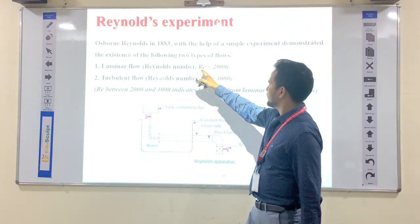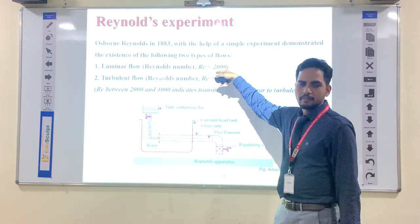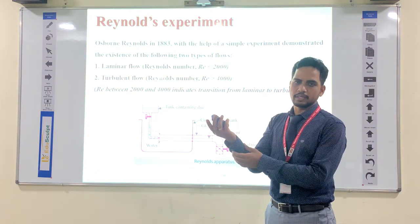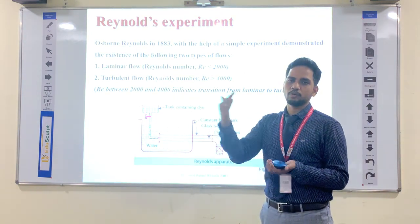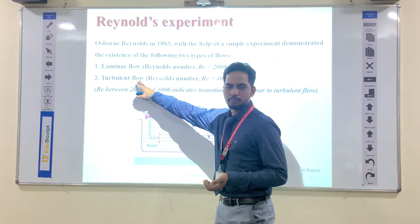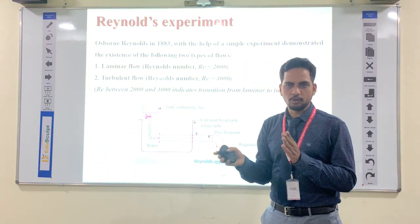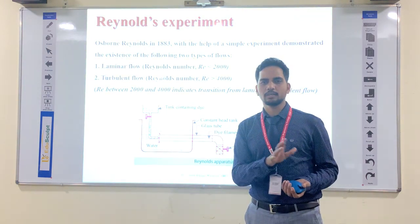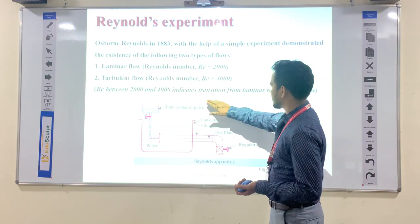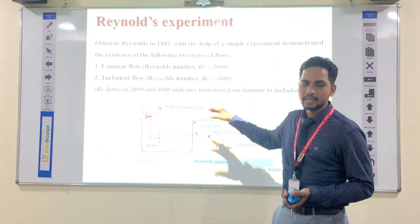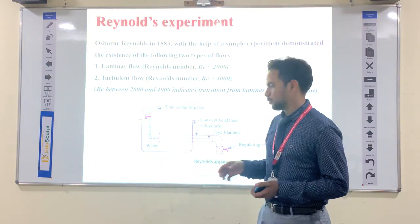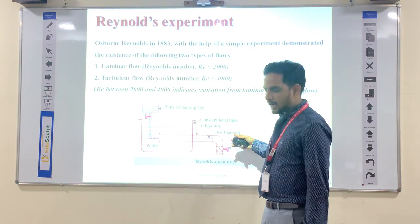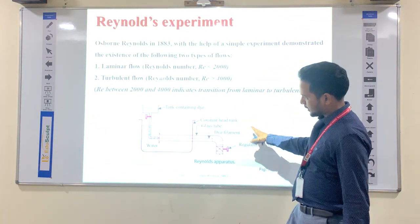If the Reynolds number is less than 2000, then the flow is called laminar flow. If the Reynolds number is above 4000, then that is turbulent flow. In between 2000 and 4000, that flow is known as transitional flow — it is neither laminar nor turbulent. Osborne Reynolds performed one experiment using the Reynolds apparatus.